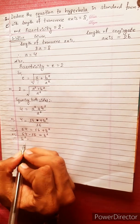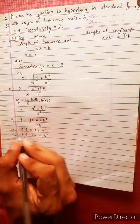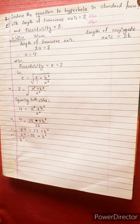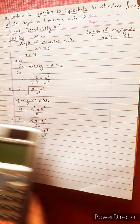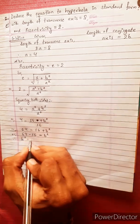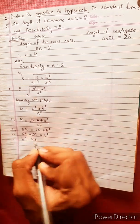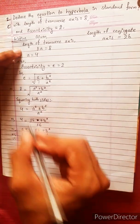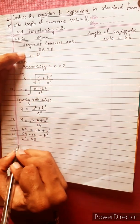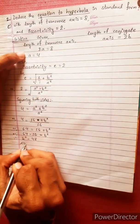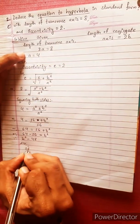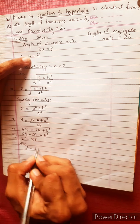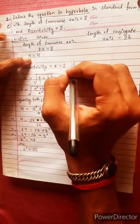Or 64 minus 16 equals to b squared. B squared equals to 48. 64 minus 16 equals 48. B squared equals 48. A squared also equals 4 squared, which is 16.